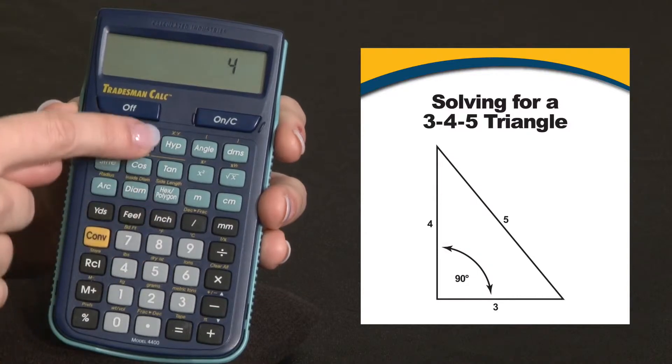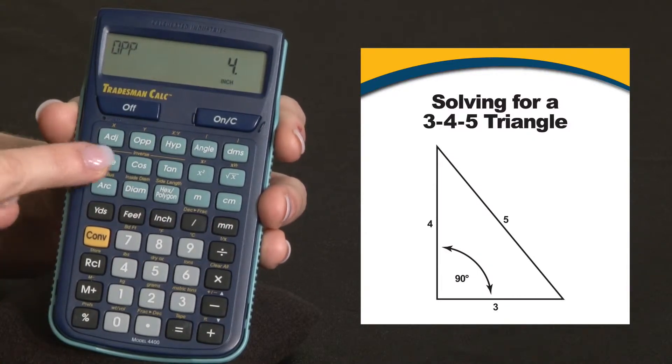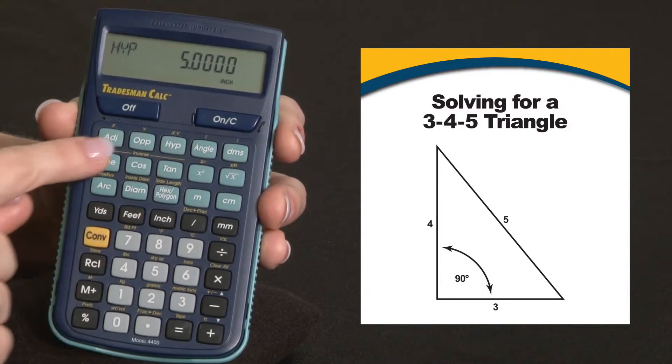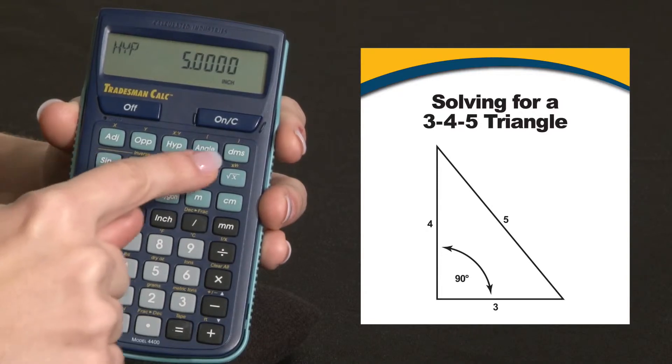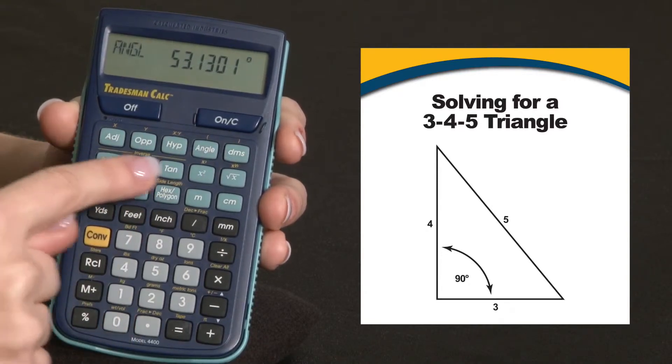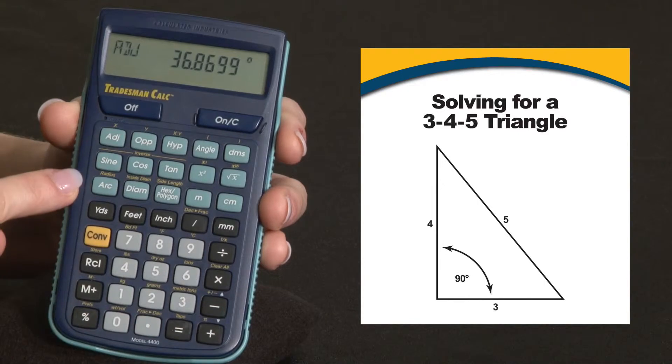We enter 4 for the opposite side, and we just press to solve for the hypotenuse or the angle, and it gives us the complementary angle.